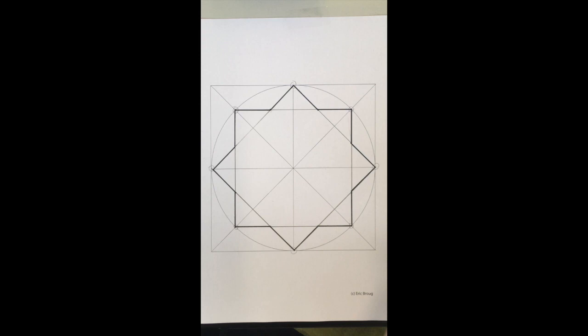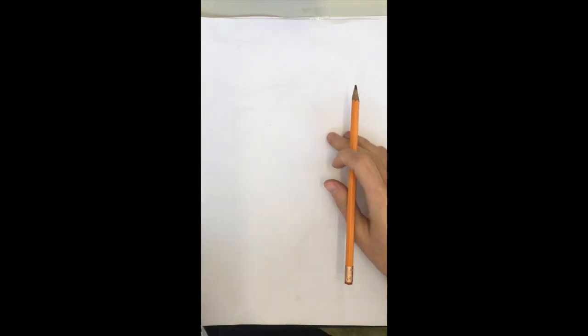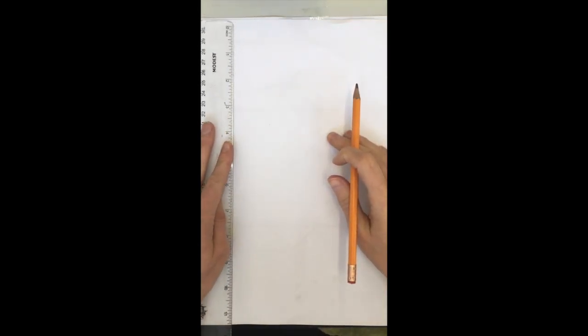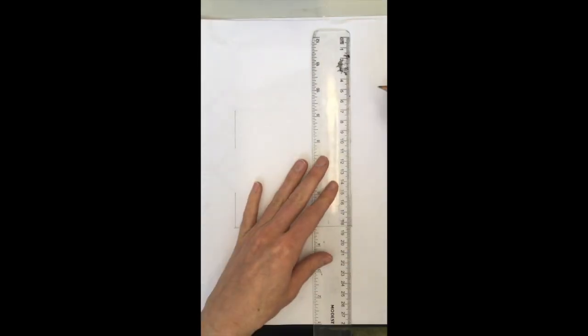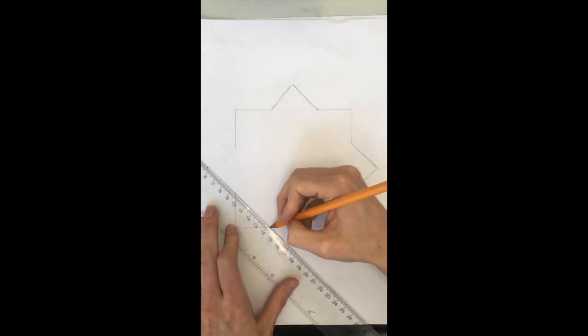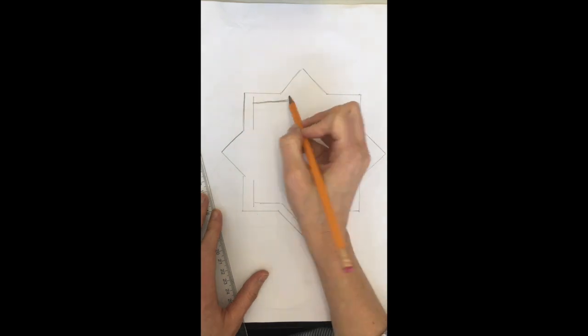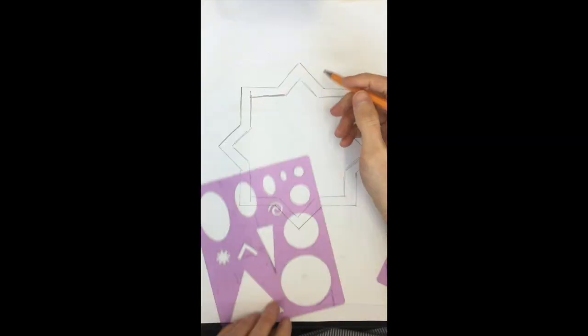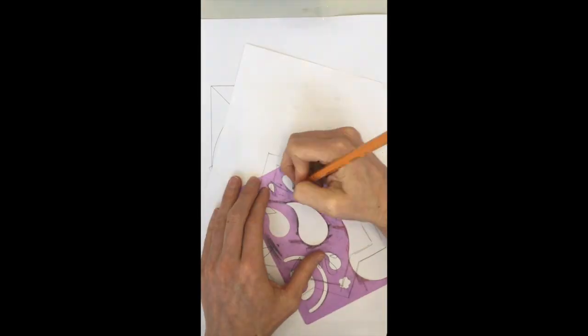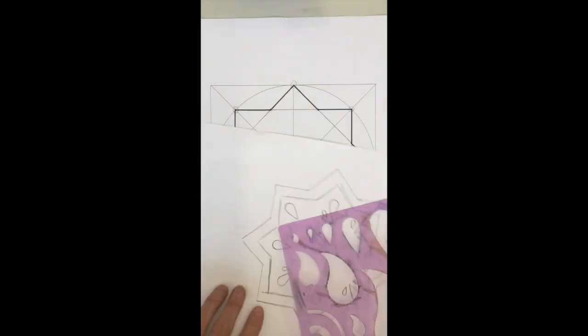Now the eight-pointed star is ready to be decorated. Here are a few ways that you can decorate. You can start by tracing it into your sketchbook or onto a piece of paper. Then you can design your tile using stencils, your imagination, or the ruler. You can draw and color however you like. You can draw a design inside that star.